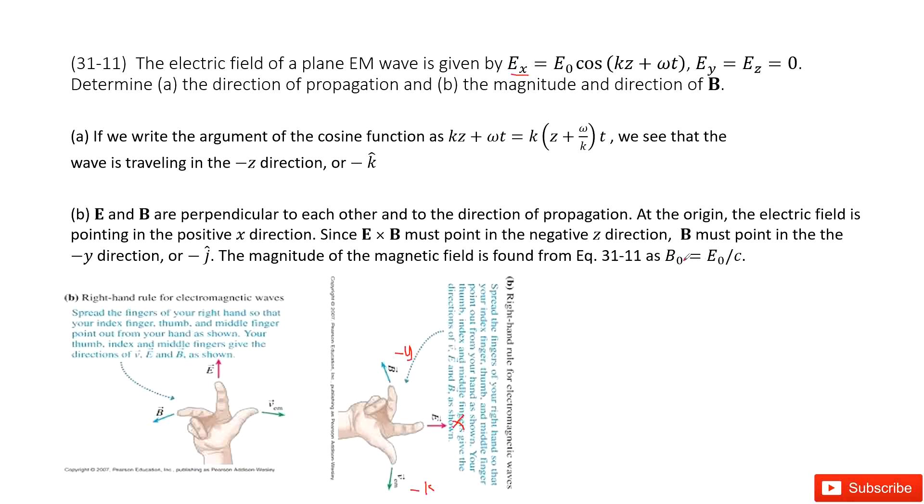Now, as we know in the equation, B0 equals E0 divided by C. So now we get the magnitude of the B magnetic field. Thank you.